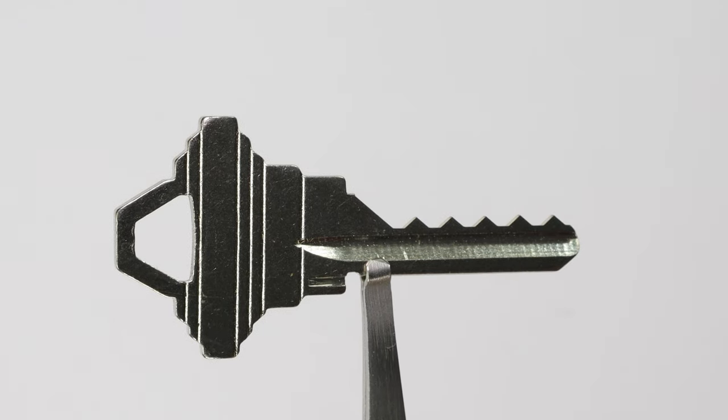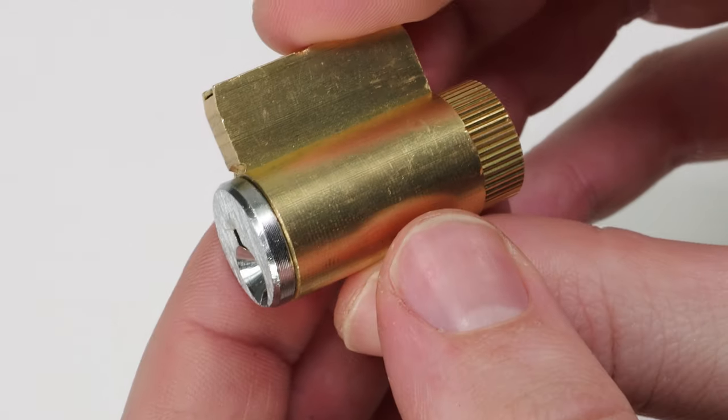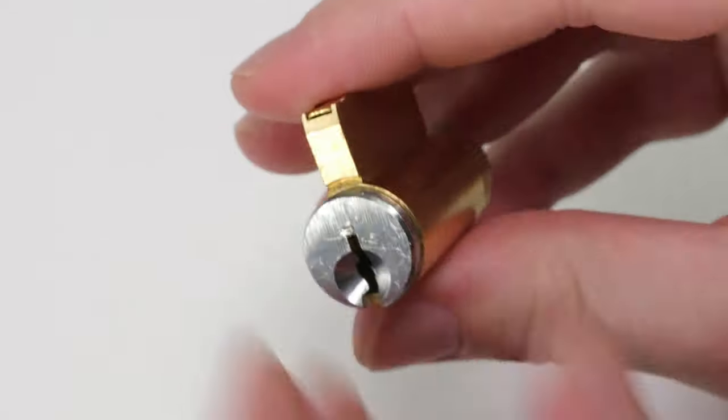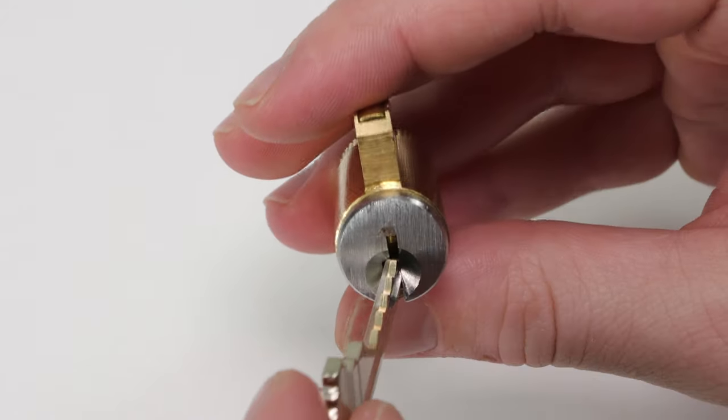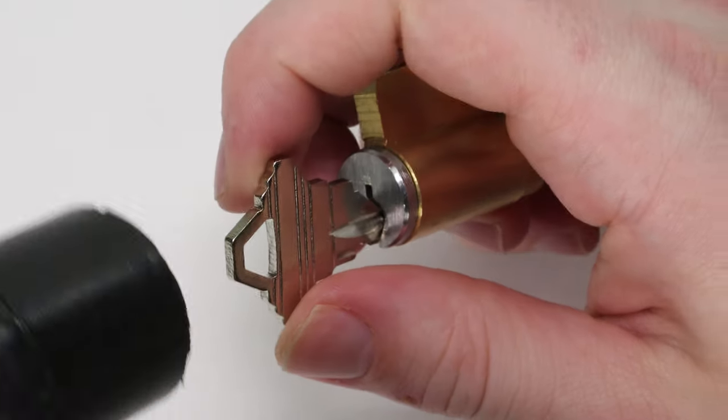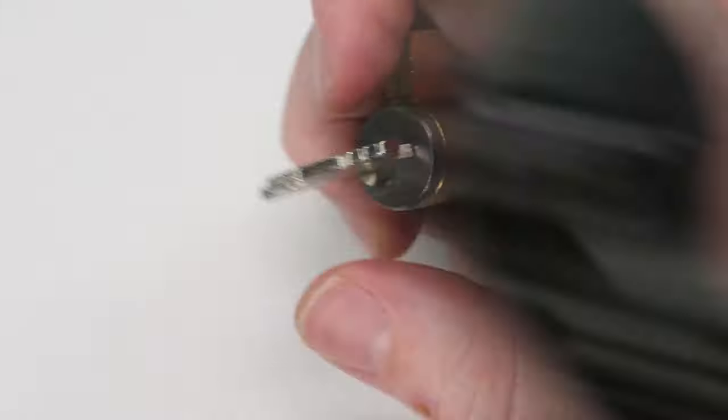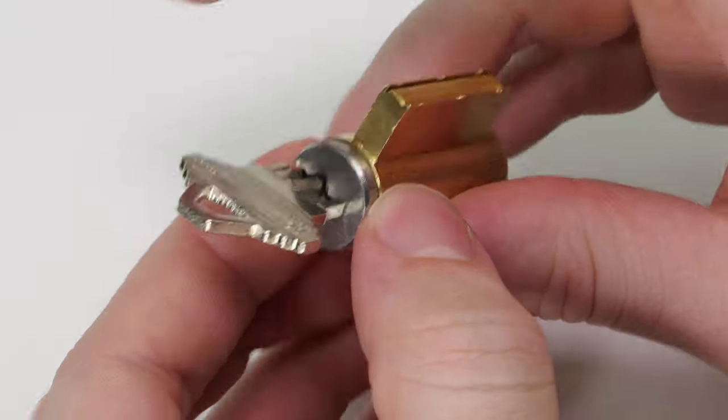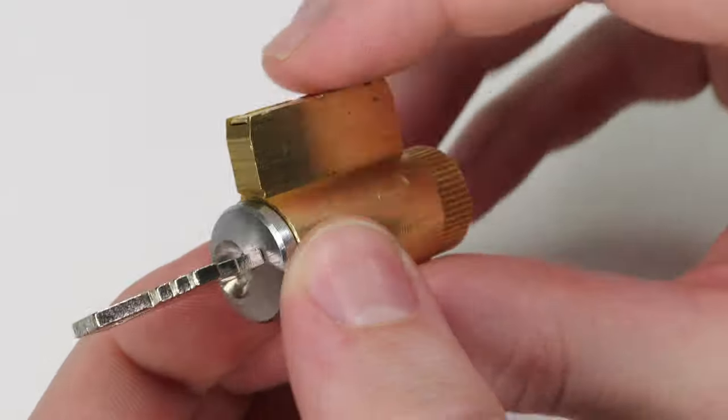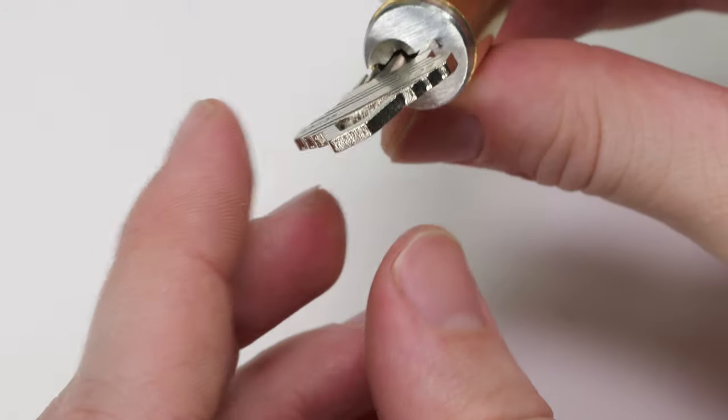Alright, so let's see how the SC1 bump key we just made performs. So what I've done is I have taken the 6th key pin, driver pin and spring out of this Schlage lock and let's see if we can bump it open. So we're going to put our bump key in, we're going to pull it out one click, put a little light tension on and hit it with our hammer. And we're just going to keep resetting until we get an open. So we just got that open on the second try. And I just want to say that this was a really fun video to make. I really hope someone found it helpful out there.